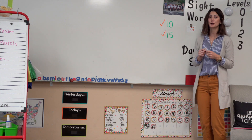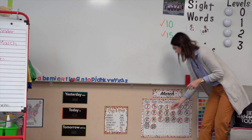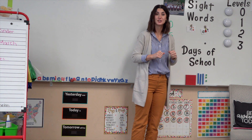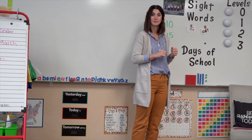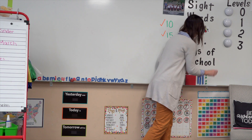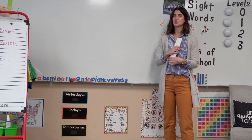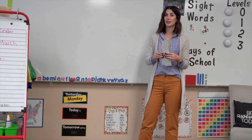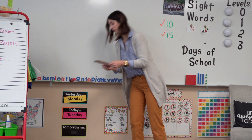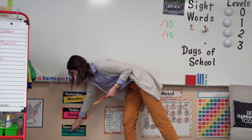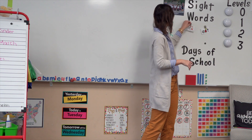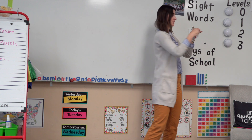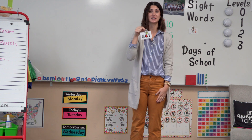Yesterday was the 23rd day of March, so today is the 24th day of March. Yesterday was our 133rd day of school, so today is our 134th day of school. What day of the week was it yesterday? Yesterday was Monday, so that means today is Tuesday, and tomorrow will be Wednesday. Let's remember our two sight words for this week. Our first sight word is if, and our second sight word is eat.